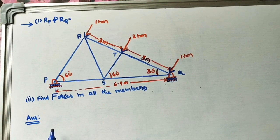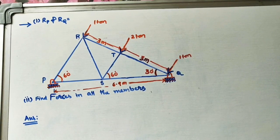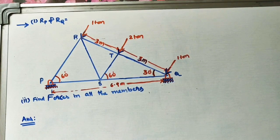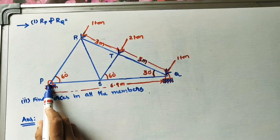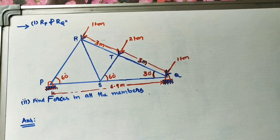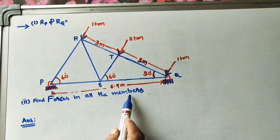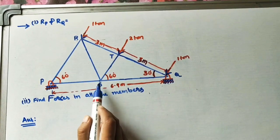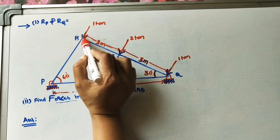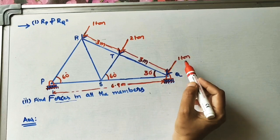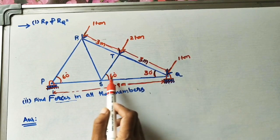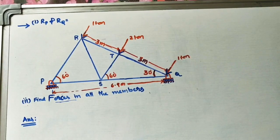In today's class we will solve the frame problem — we can also call this a truss, because it is a combination of triangles. In this given truss we have to find the reactions at point P and point Q, that is reaction Rp and reaction Rq. We also have to find forces in all members: PR, PS, RS, RT, and so on, because forces develop due to the applied loads.